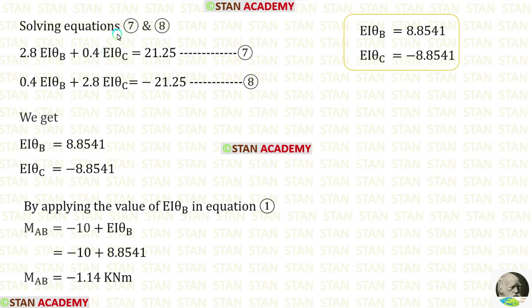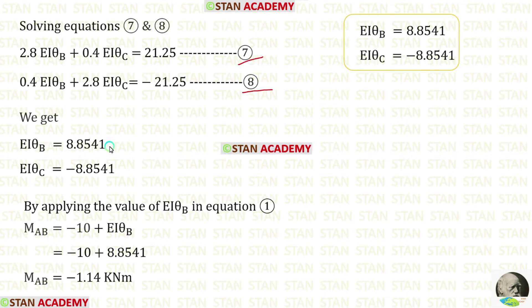We have made two equilibrium equations, number 7 and number 8. Using the calculator to solve these two equations — if you do not know how to solve two equations on the calculator, see the link in the description below. Solving the equations, for EθB we get 8.8541 and for EθC we get minus 8.8541.